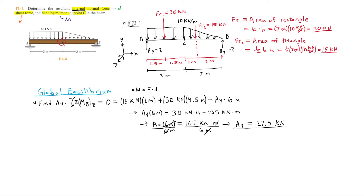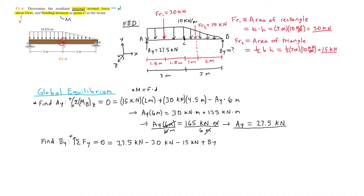Since we are asked to find internal loadings at point C, we could leave out By and just use Ay, analyzing the left side of the beam. However, we'll also find By by summing forces in the y-direction: 27.5 kN − 30 kN − 15 kN + By = 0, giving By = 17.5 kilonewtons.